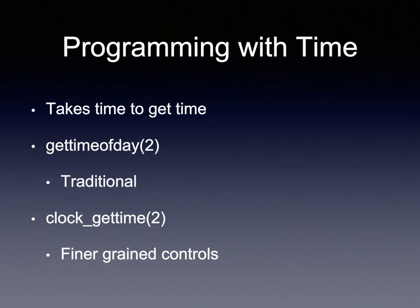Coming back to the APIs: gettimeofday has one level of accuracy based on your OS and underlying hardware — good enough for seconds and usually milliseconds, but not for microseconds or nanoseconds. clock_gettime lets you choose: fast time (don't spend CPU on adjustments) or the most accurate time available at the cost of more CPU resources. This was added because gettimeofday wasn't giving programmers enough control.